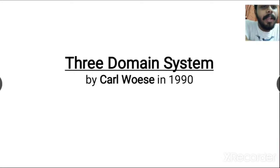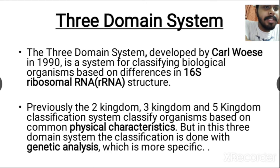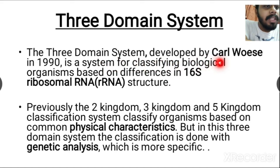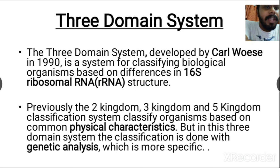Hello friends, today in this video we are going to discuss the three domain classification system, which was introduced by Karl Woese in the 1990s. It is a system for classifying all biological organisms based on their differences in 16S rRNA sequence.